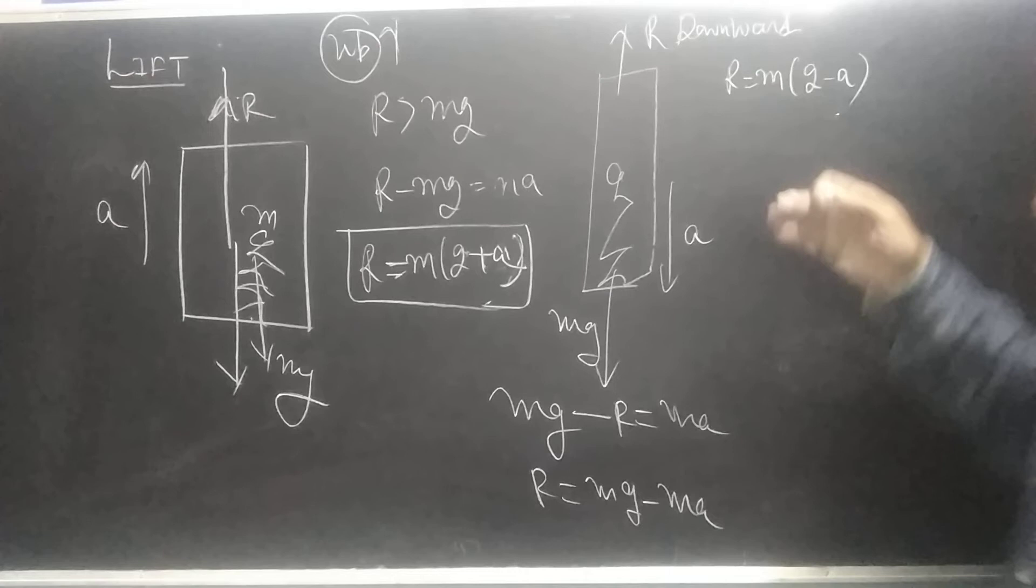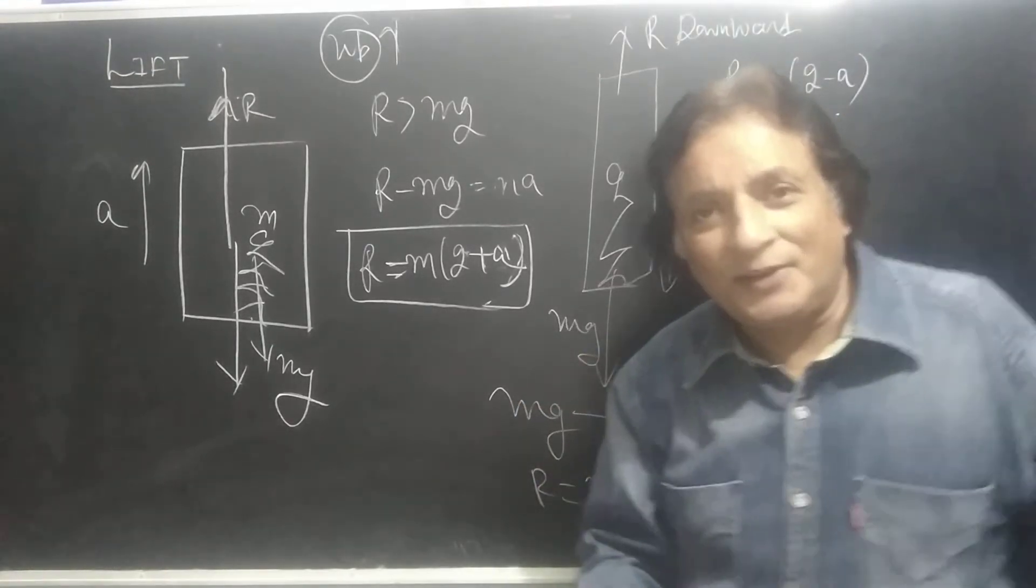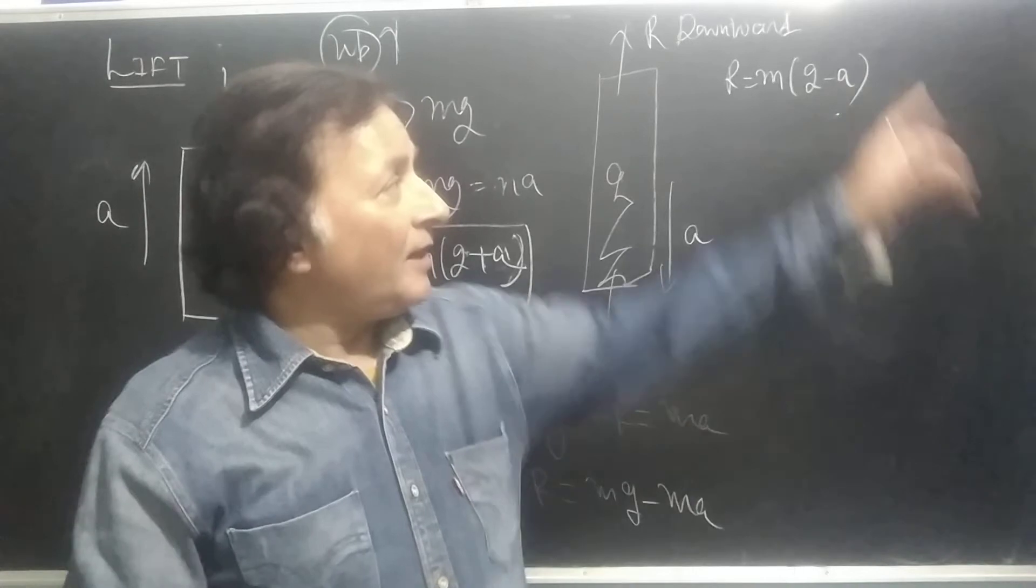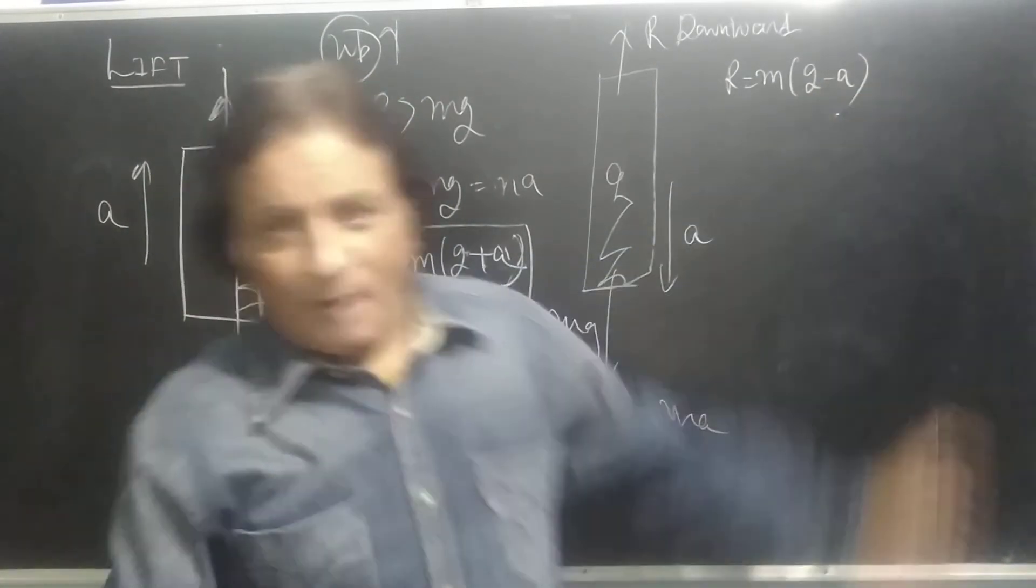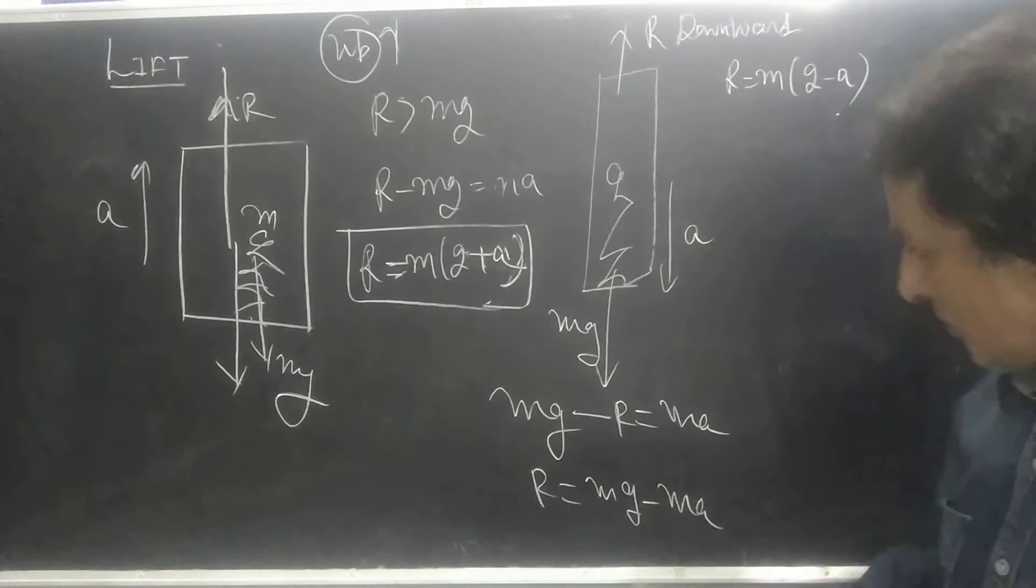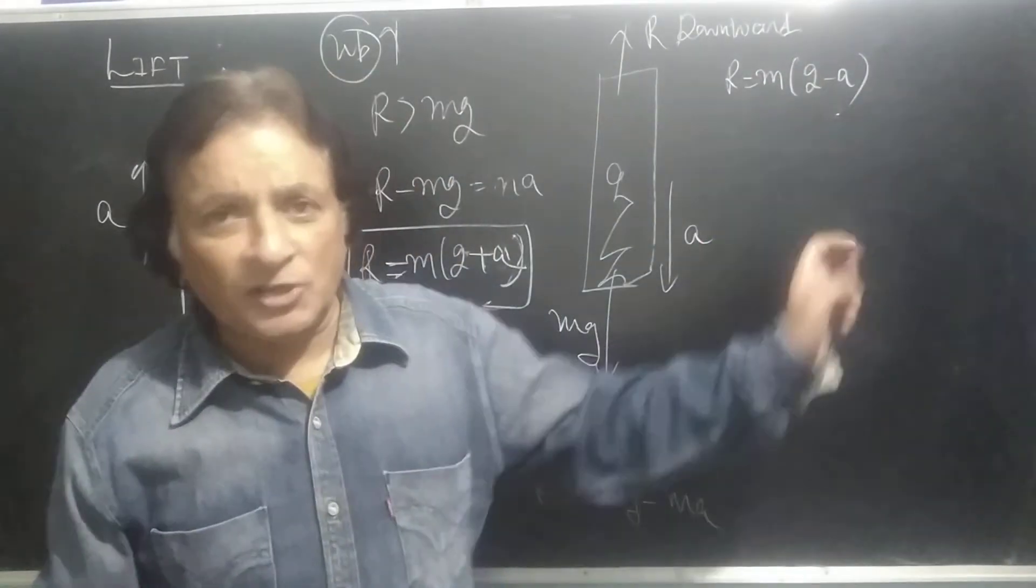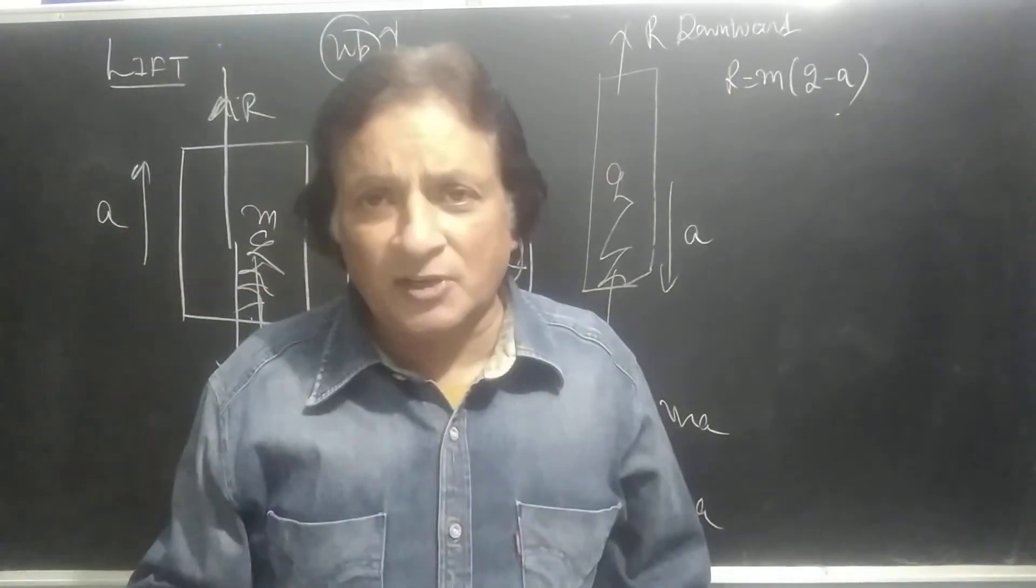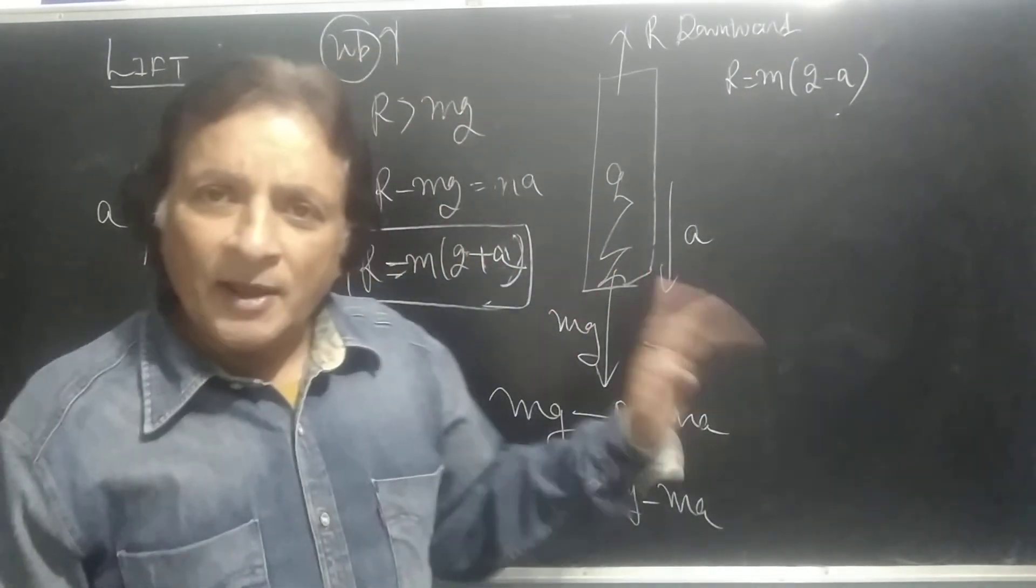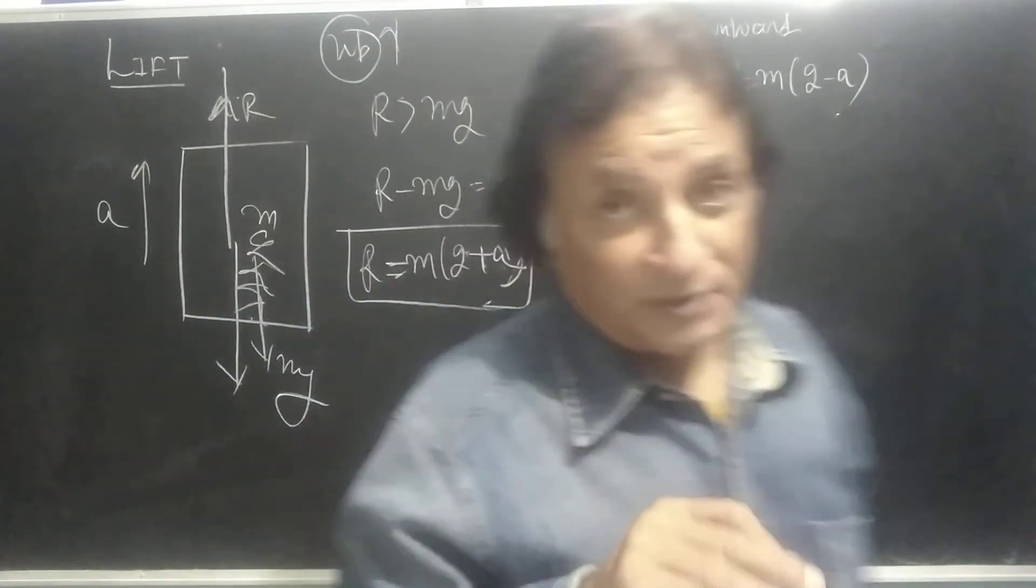Now when you are down in lift, what is your weight? It will decrease by the value of acceleration. When you are up, your weight will increase by the value of acceleration. When you are down, your weight will decrease by the value of acceleration. If you are down at uniform velocity, then acceleration is zero, so your weight will remain the same.